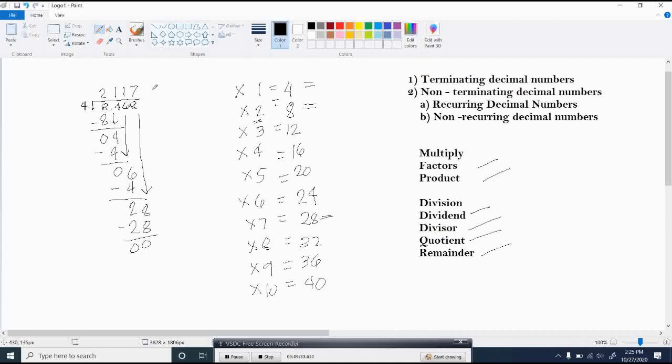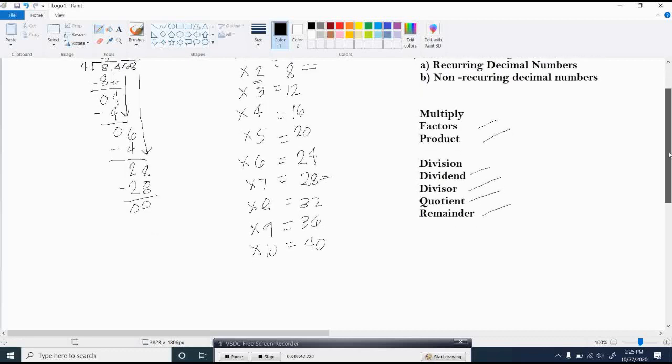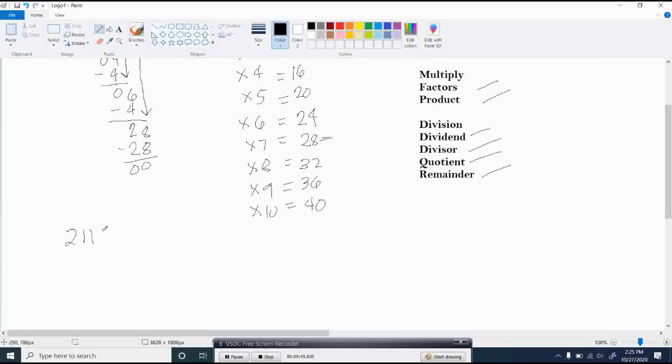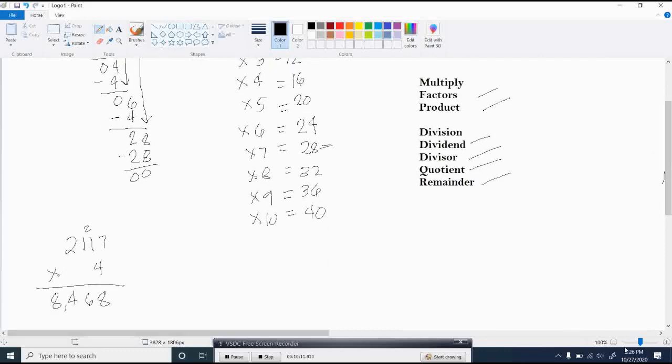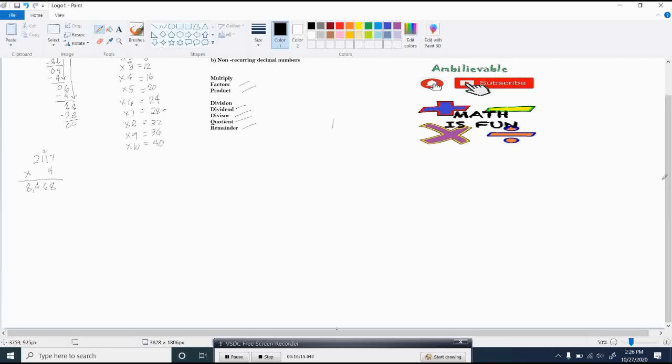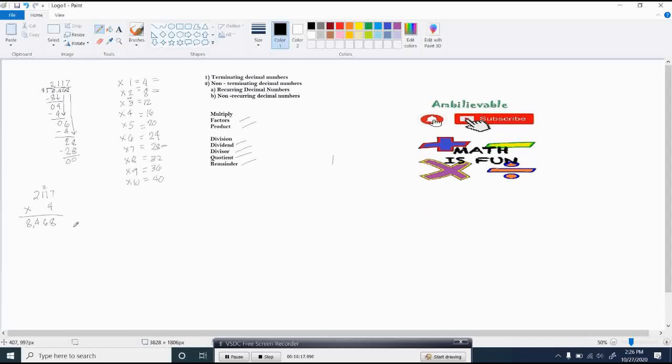So the exact answer here is 2117. There is another way on how you are going to check if your answer is correct by simply multiplying your quotient to your divisor. So 7 multiply 4 is 28. 8 down, carry up 2. 4 multiply 1 is 4, plus 2 is 6. 4 multiply 1 is 4. 4 multiply 2 is 8. So if your product is the same with the number in your dividend, the answer is correct.